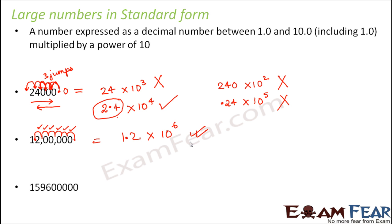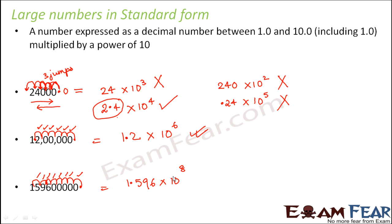Let us take one more example with a bigger number. The decimal point is at the end. We need to shift it left until the leading value lies between 1 and 10. Placing the decimal here gives 159.6 — not between 1 and 10. Placing it one step further gives 15.96 — also not between 1 and 10. Placing it one more step gives 1.596, which does lie between 1 and 10. Counting the jumps: 1, 2, 3, 4, 5, 6, 7, 8 — that is 8 jumps. So the standard form is 1.596 into 10 to the power 8.